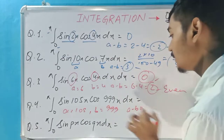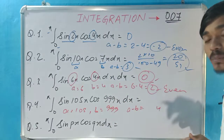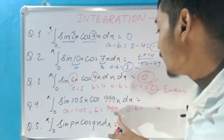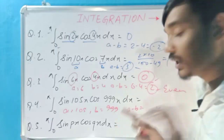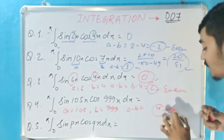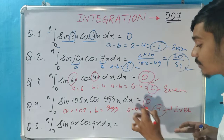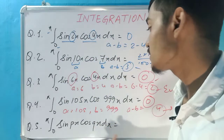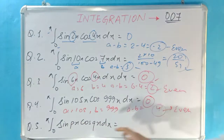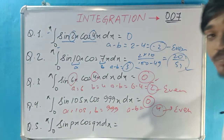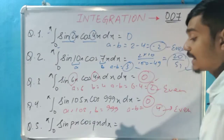For the third question, the integral is from 0 to π of sin(6x)cos(4x). Here a equals 6 and b equals 4, so a minus b equals 6 minus 4, which is 2. Since 2 is an even number, our answer comes out to be 0. The difference a minus b is even, so the answer is 0.